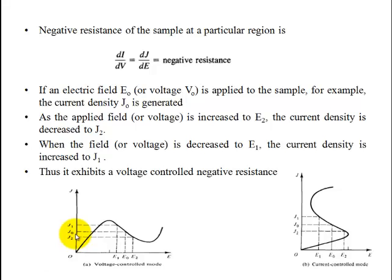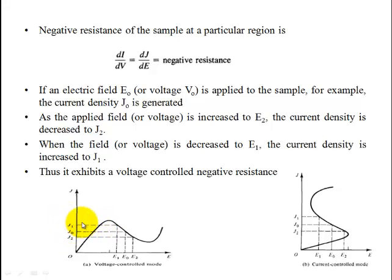Then we increase the electric field from E₀ to E₂ — the current density also increases from J₀ to J₂. Next, when the electric field decreases from E₀ to E₁, the current density increases — meaning as field decreases, current increases. This inverse relationship in that region of the graph corresponds to negative resistance.